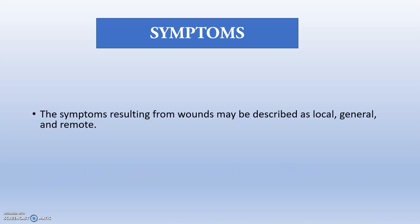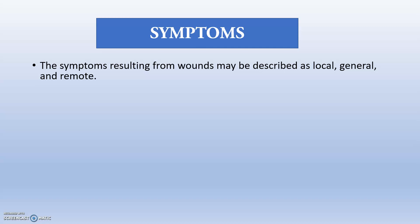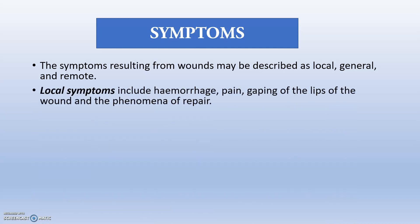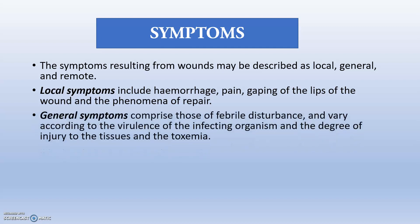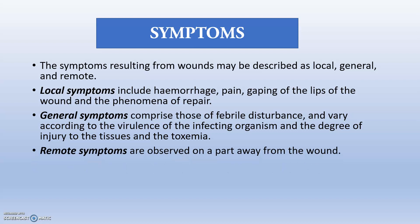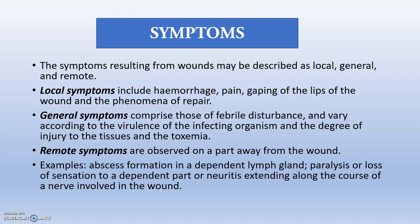The symptoms resulting from wounds may be described as local, general, and remote. Local symptoms include hemorrhage, pain, gaping of the lips of the wound, and phenomena of repair at the local area. General symptoms occur when the wound is very large and produces febrile disturbances — bacteria produce virulence and pathogenesis, leading to fever and chills. Remote symptoms are observed in a part away from the wound, such as abscess formation in a dependent lymph node, paralysis or loss of sensation to a dependent part, or neuritis extending along the coat of the nerve involved.